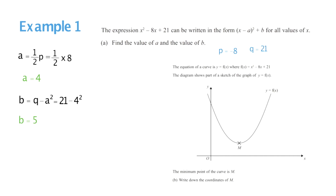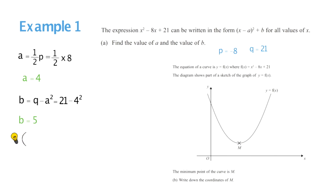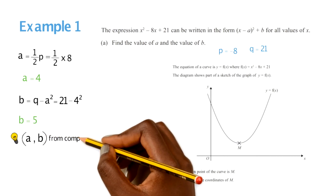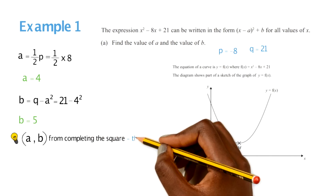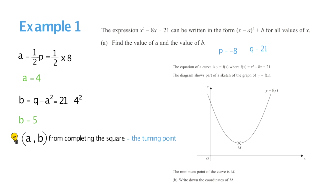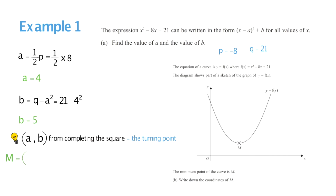The second part of the question wants us to write down the coordinates of the minimum point. When it comes to completing the square, your a and b values are basically your x and y — they are equivalent to the turning point. So your a and b from completing the square give you the coordinates of the turning point, which is the minimum or maximum point of the quadratic curve. In this case, our minimum point is (4, 5).